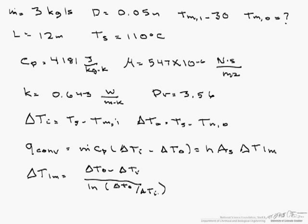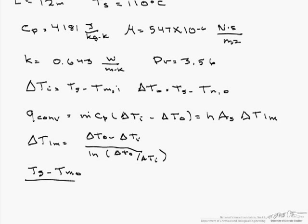So our delta T log mean is (delta To minus delta Ti) over Ln of (delta To / delta Ti). The problem with this is we have our Tm out involved in a number of the different terms. So the first thing we can do is take the delta T out from the natural log term. So now we have (Ts minus Tmo) divided by (Ts minus Tmi) equals exponential of (minus H As / M Cp).